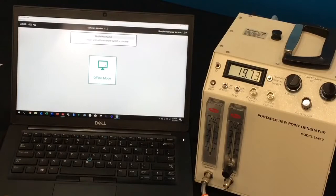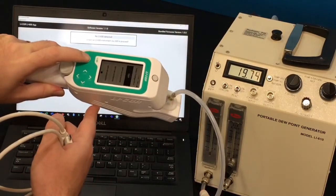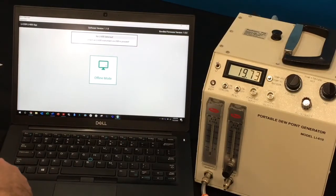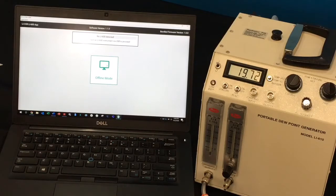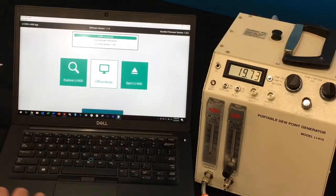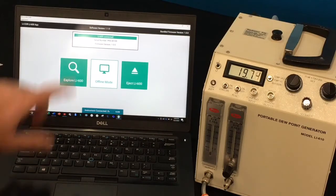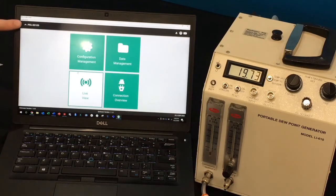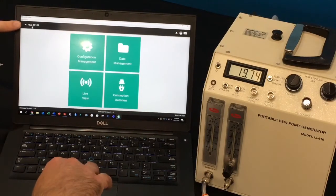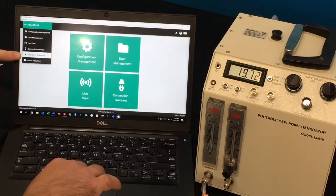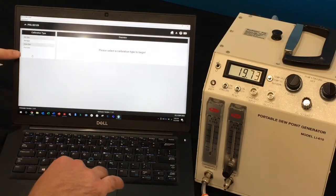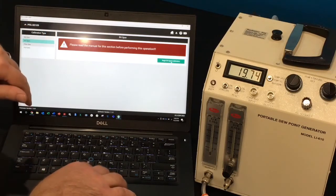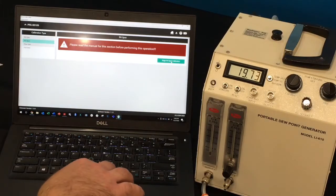Next to perform the span we'll need to turn the LI-600 on and connect it with USB to the computer. The LI-600 Windows or Mac software will automatically recognize when the instrument is connected. We'll go to explore LI-600 and then in the top left corner there's a menu with the instrument serial number. If you click on that we'll go down to instrument calibration and we'll want to select RH span. It says please read the manual or watch this video and then we can begin RH span calibration here.